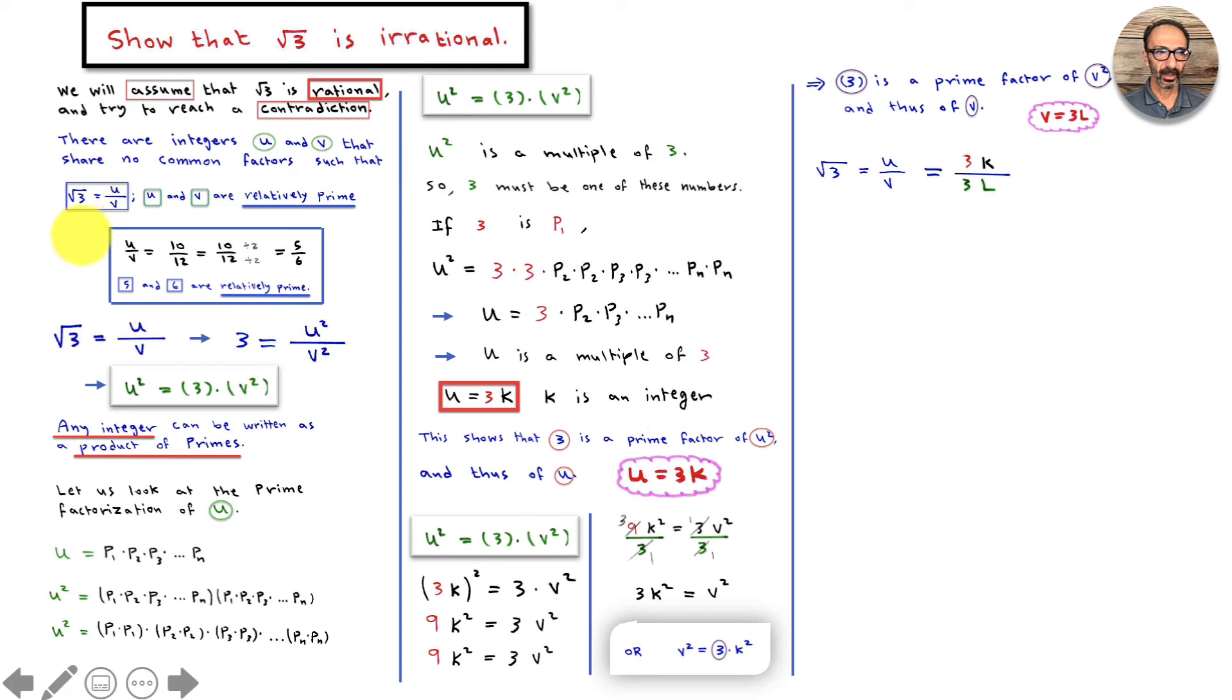In short, v equals 3 times l, where l is an integer. Let's go back to our rational number that we assumed was rational. u over v becomes 3k over 3l, which reduces to k over l because 3 is a common factor of u and v.